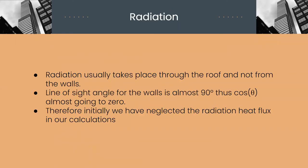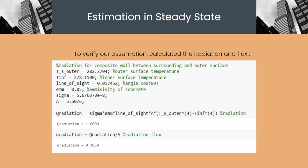Talking about radiation, radiation usually takes place through roof and not from the walls. Line of sight angle for the walls is almost 90 degrees. Thus, cos theta is almost going to zero and thus the value of radiation is significantly very low. Therefore, initially we have neglected the radiation heat flux in our calculations.